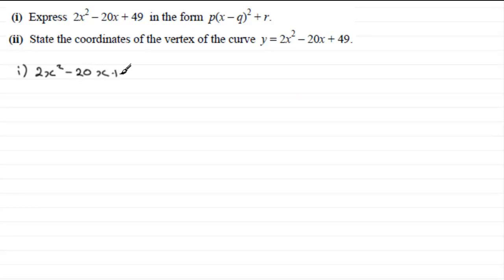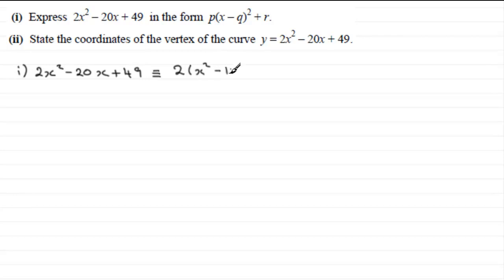We have 2x squared minus 20x plus 49. When we have a number in front of the x squared, we pull that number out to the front of a bracket. There are two ways to do this: we can pull 2 out across the first two terms, or across all three terms. I'll show you both methods. Pulling it out across the first two terms gives us 2 multiplied by (x squared minus 10x), then plus 49 on the end.